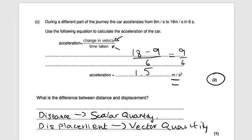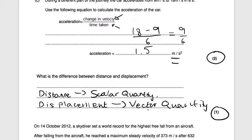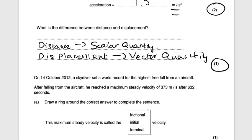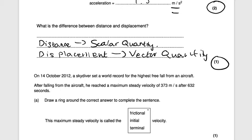Next question: on 14th of October 2012, a skydiver set a world record for the highest free fall from an aircraft. After falling from the aircraft, he reached a maximum steady velocity of 373 meters per second after 632 seconds. Draw a ring around the answer to complete the sentence — the maximum steady velocity is called the terminal velocity. That's the maximum velocity you can reach, worth one mark.